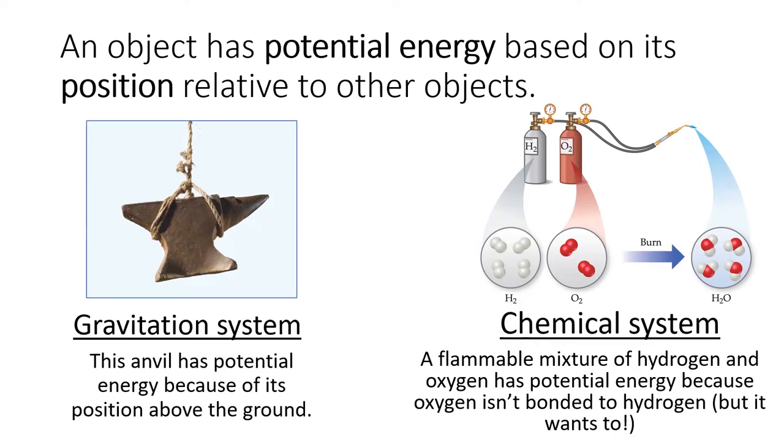Chemical potential energy is more difficult to understand than gravitational potential energy, but it becomes easier if we imagine that chemicals want to form favorable bonds. Oxygen is a perfect example.